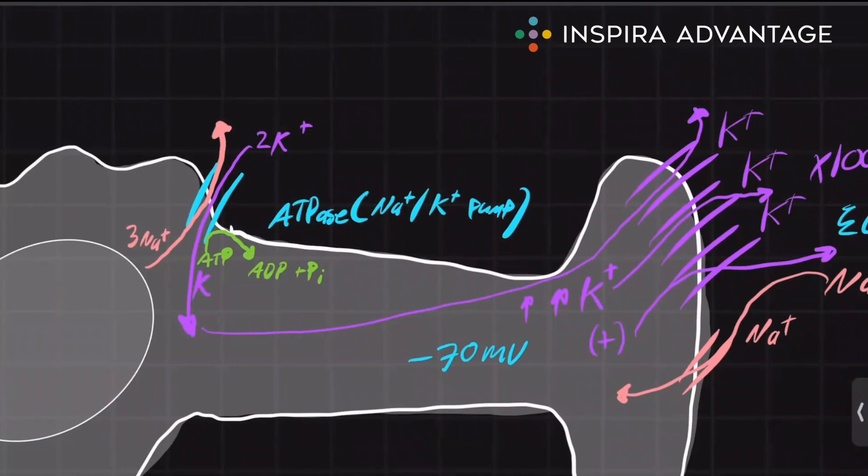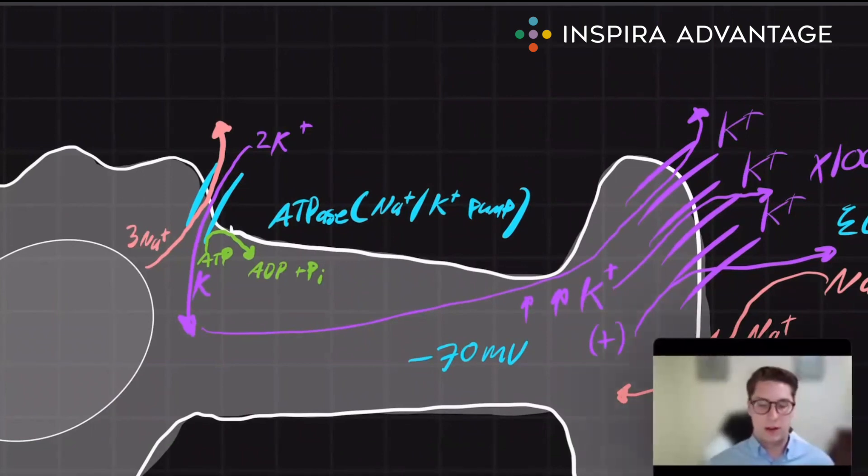Now, hopefully this has increased your knowledge of the resting membrane potential and the ultimate goal of understanding an action potential for the MCAT. If you would like to learn more about the action potential, please check out our next video where we dig into how to apply the resting membrane potential and what this means for the action potential as a whole. Thank you for watching and I'll see you next time.